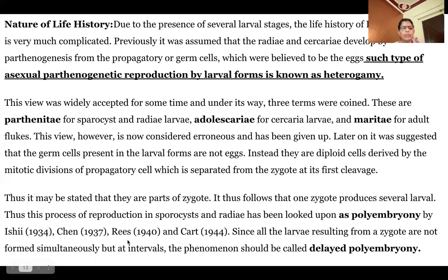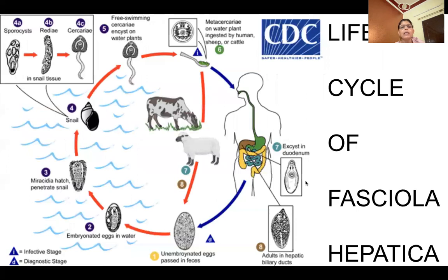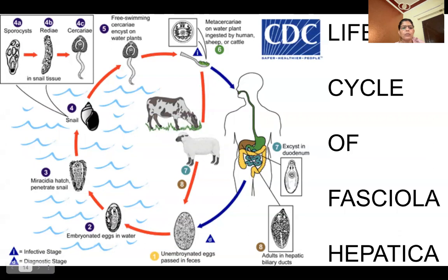Some scientists consider this to be polyembryony, where sporocysts and radiae represent embryos. To summarize the life cycle: in water the miracidium hatches, it penetrates the snail, develops into sporocyst, then redia, then cercaria, which is released from the pulmonary system of the snail and forms the metacercaria that infects the final host.